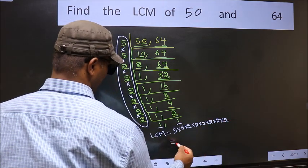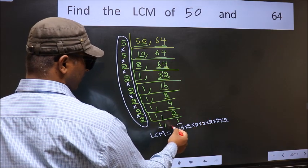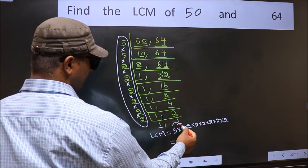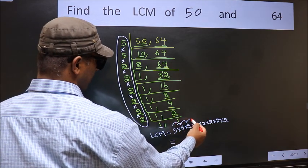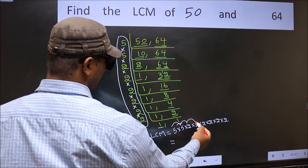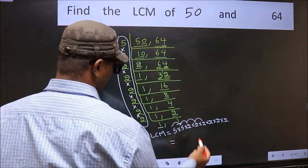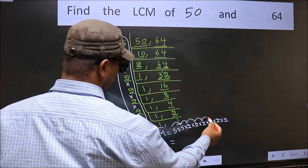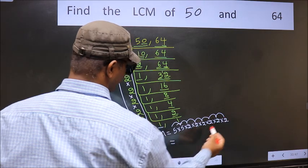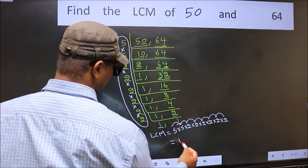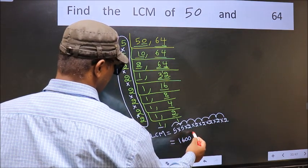Let us multiply these numbers. 5 into 5 is 25, into 2 into 2 into 2 into 2 into 2 into 2. LCM.